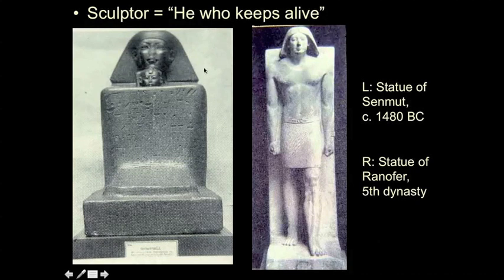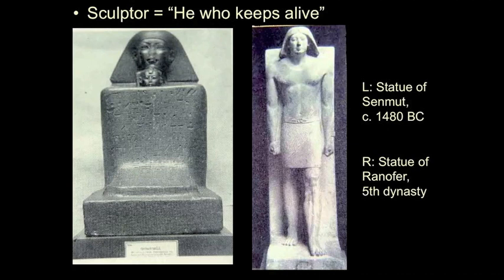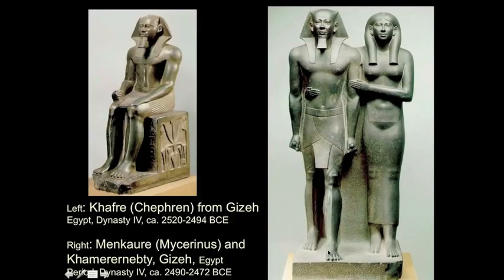Here we see our statue from 1480 BC alongside a Fifth Dynasty statue of Ranafer from about 2500 BC — and they're more or less the same. Same little hairdo, same preference for stereotomy, same severe motionless geometry. You see this striding pose — a suggestion of movement, but not real movement. In fact, one leg is about five inches longer than the other. But it's a conventionalized pose we see again and again: figures moving forward, moving into the afterlife.